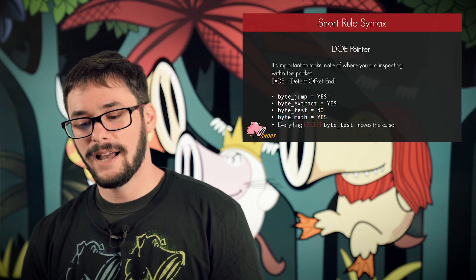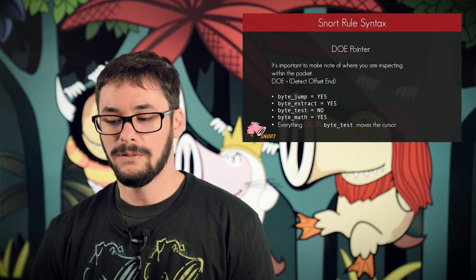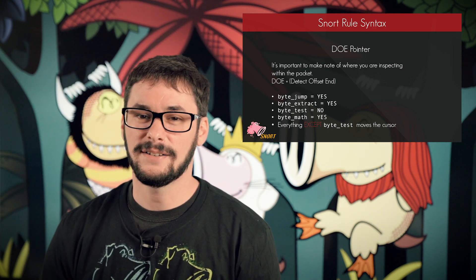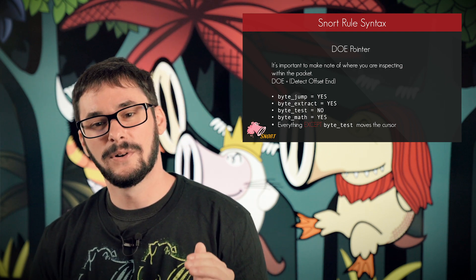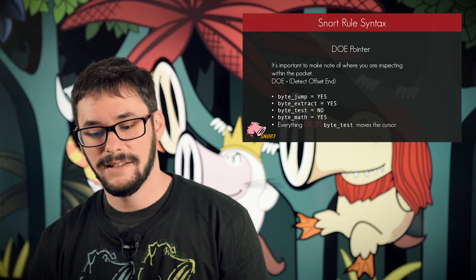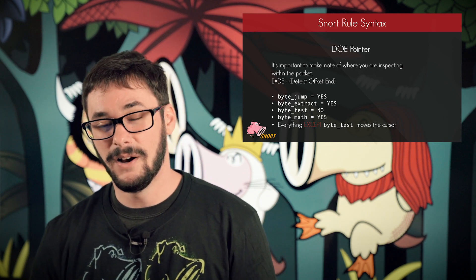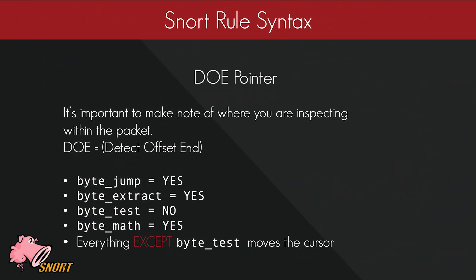You're probably wondering how you know exactly where you are in a file when using relative detection options. This is tracked in the DOE pointer, which stands for Detect Offset End. This is where Snort keeps track of its position in a packet, allowing you to use detection modifiers such as distance, within, and relative detection options. If you had a content match for 'security', the DOE pointer would be positioned at the next byte after the word 'security'. The important thing to note is that there are options that do not move the pointer — all of the byte operations move the DOE pointer except for byte test.